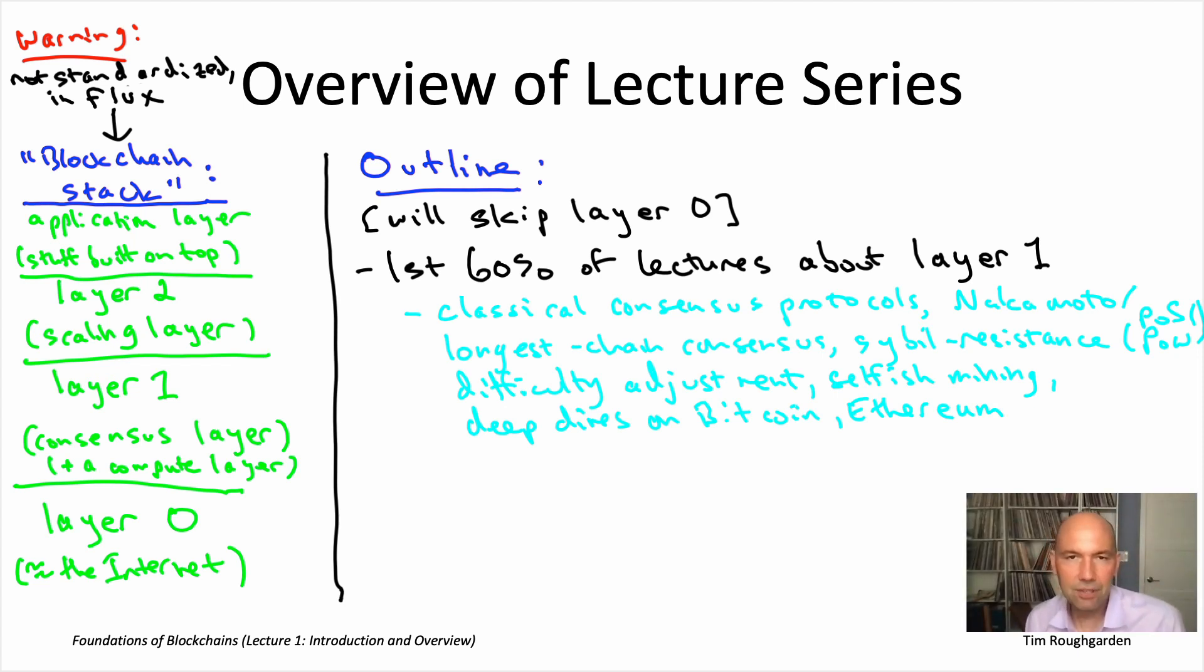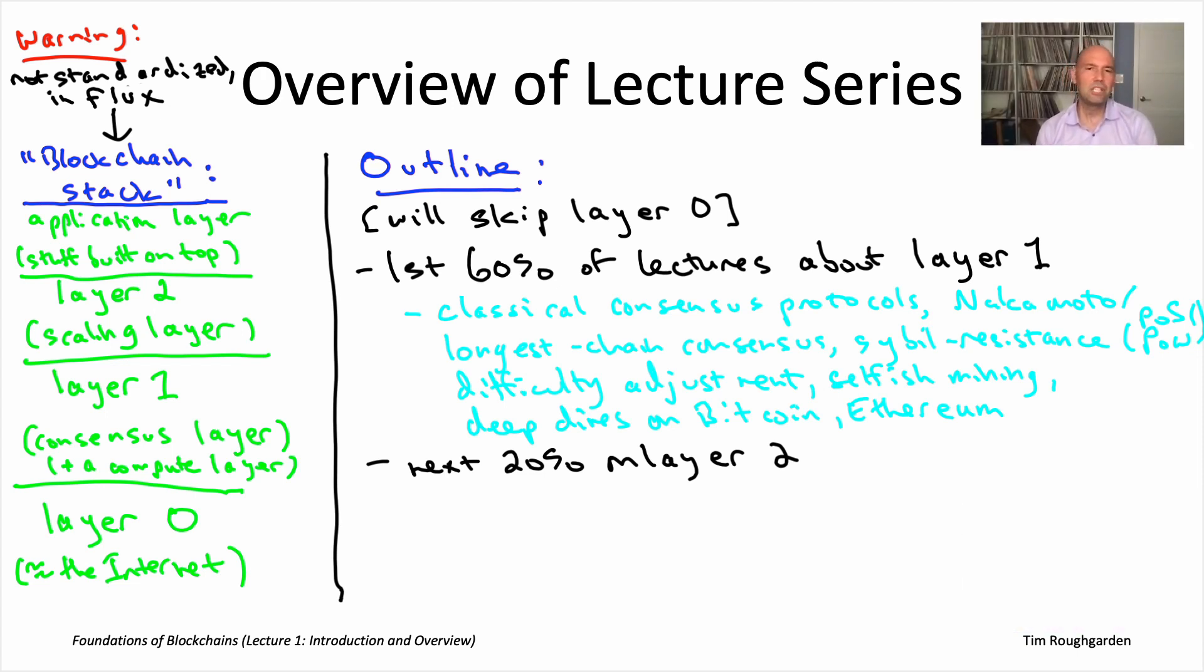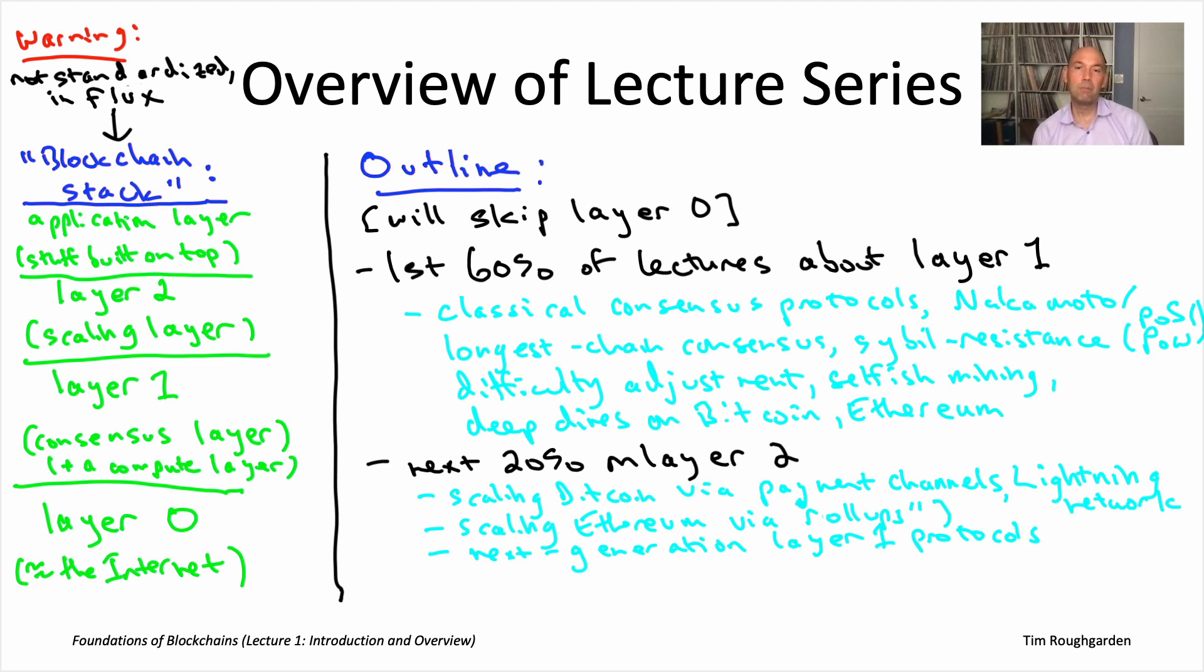So speaking of layer two, that's where we're going to go next. And that'll be maybe 20% or so of the lectures, maybe five or so lectures I expect to be on layer two solutions, scaling solutions. Like I said earlier, layer two solutions seem necessarily dependent on the layer one consensus protocol they're trying to scale up. So we'll treat Bitcoin and Ethereum separately. For Bitcoin, we'll talk about the lightning network and payment channels, which is the primary attempt thus far to scale up Bitcoin. And then for Ethereum, we'll talk about scaling solutions known as rollups, which come in two flavors, optimistic rollups, which are simpler but offer only game theoretic guarantees, and also ZK rollups, which are more complicated but offer stronger cryptographic guarantees. And then maybe somewhere in here, we'll also sneak in a lecture about newer generations of layer one consensus protocols that claim to be so much faster than Bitcoin and Ethereum that they may not need a layer two protocol at all.